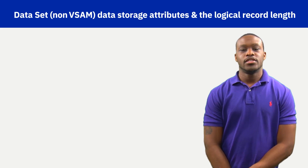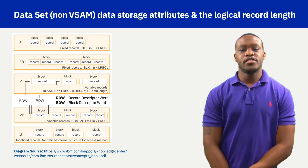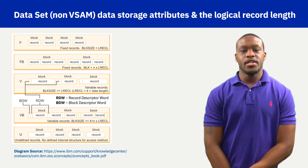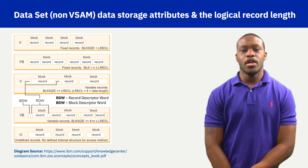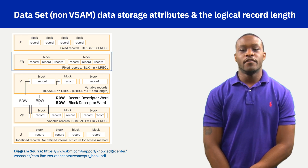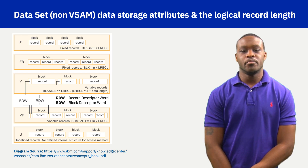Datasets consist of records with defined lengths. When all records in a dataset are of equal length, the dataset record format attribute is F for fixed. When a dataset attribute is fixed, a programmer's request for a record results in only one record being read from the dataset and placed into memory for the program to read. A record format of FB, fixed block, contains equal length records; however, a program's request for a record results in a block being read from the dataset and placed into memory, anticipating that the program wants to read more than a single record.